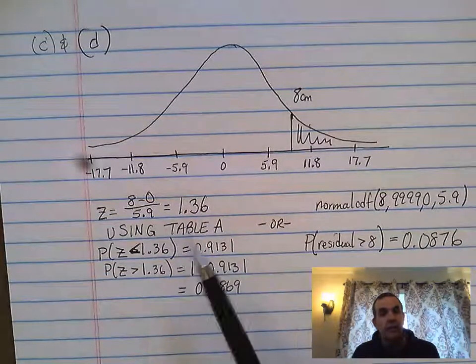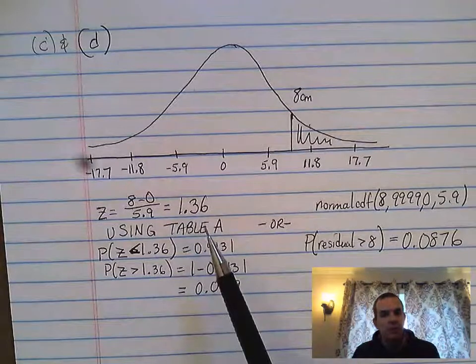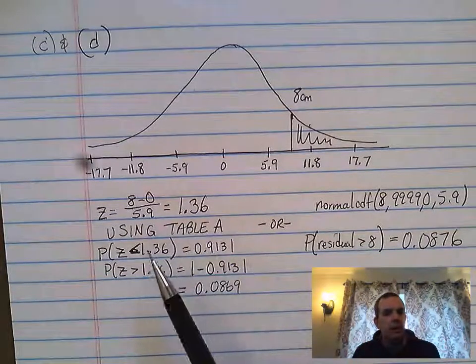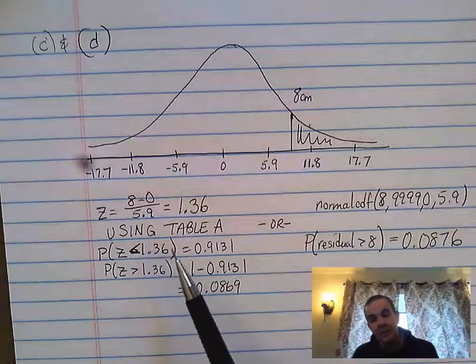And then you could go ahead and use Table A, which is the standard normal distribution table. That table would give you the probability of z being less than 1.36, which is 0.9131.